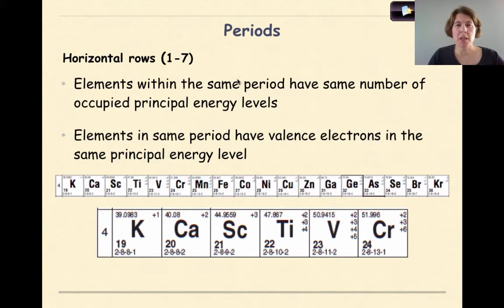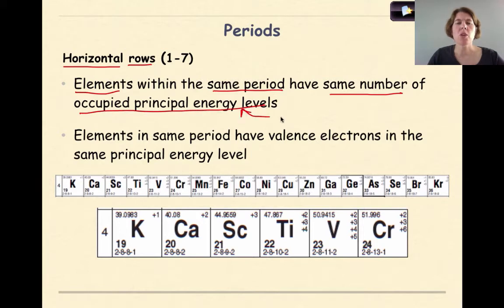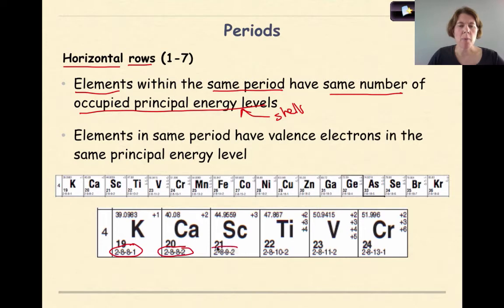Now we're going to examine the periods of the periodic table. The periods are the horizontal rows, rows one through seven. Two things you need to realize about periods: elements within the same period have the same number of occupied principal energy levels, also called shells. For example, looking at period four, every element has four shells or four principal energy levels.